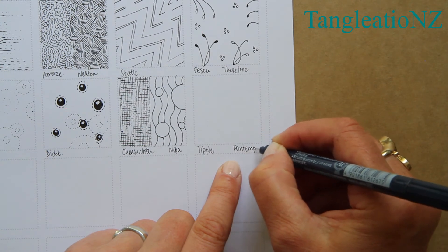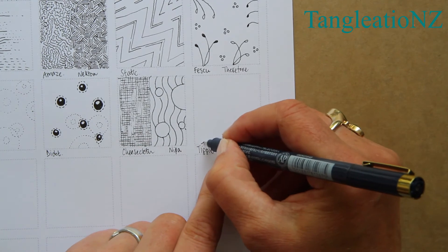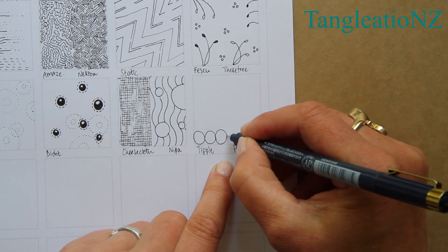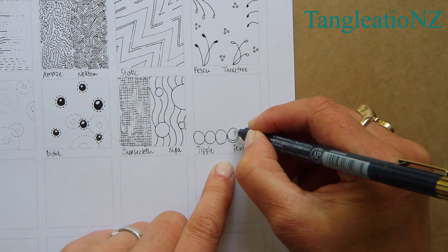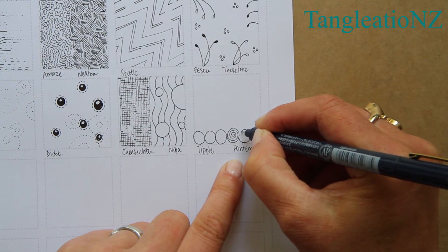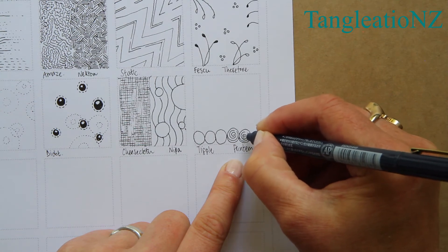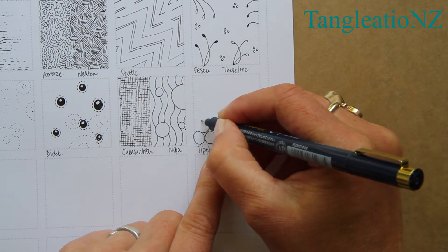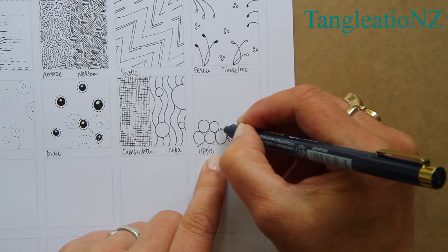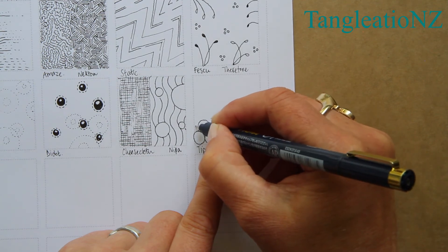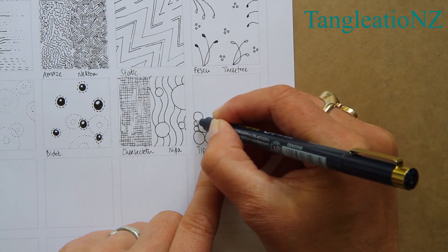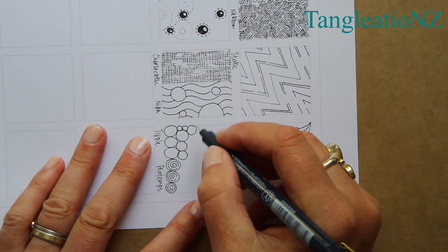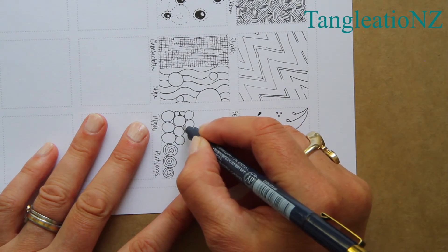Sometimes when you're tangling you go off on a different tangent than you meant to, and that's just fine. I want to mention these two obvious orb tangles: Tipple and Pretomps. There's a lovely wee technique you can do with these two which is worth thinking about and remembering. There's lots of different ways of drawing Tipple, as you know.